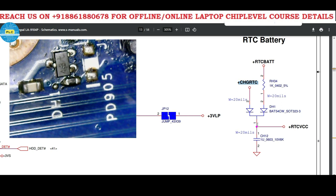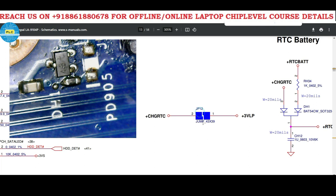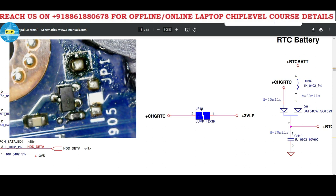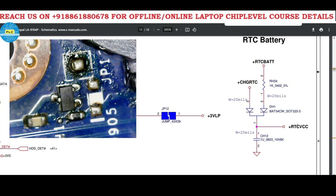Pin number 1 becomes RTC_VCC. A jumper JP1 is provided here. The 3VLP internal motherboard supply comes to this jumper and becomes Charge_RTC. That Charge_RTC supply is given to the diode, which has two anodes and one common cathode. One anode receives Charge_RTC and the other receives the RTC battery voltage, and finally it becomes RTC_VCC.